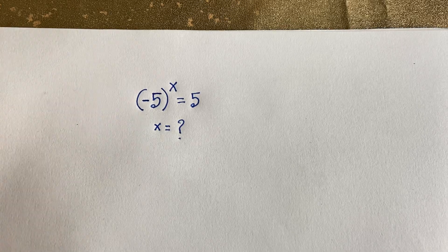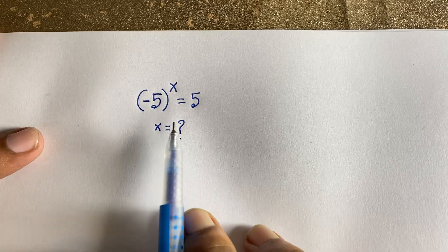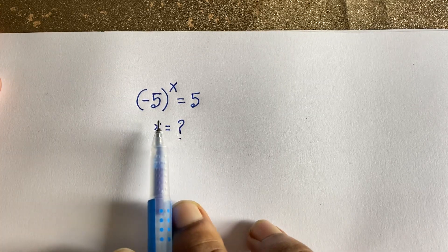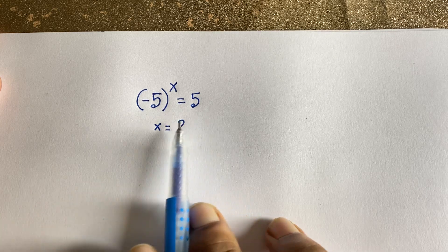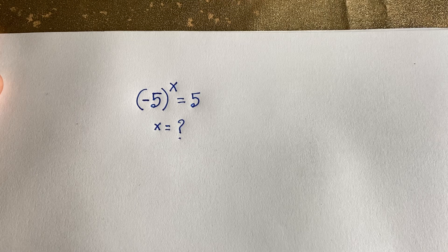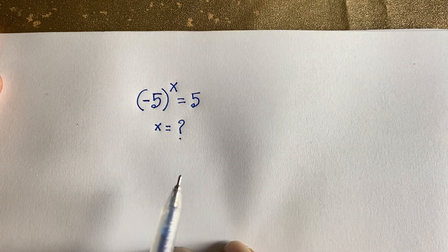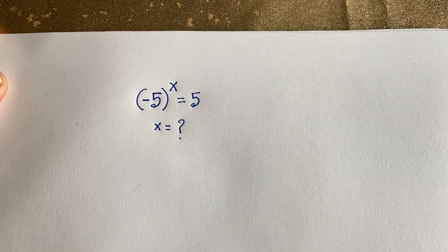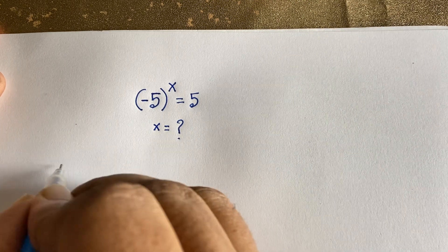Hello everyone. In this video we solve this interesting math question: how to solve this math olympiad question — (-5) to the power x is equal to 5, x is equal to what? Because of the minus 5, I can't use logarithm on both sides directly, so I will solve this question using two methods.